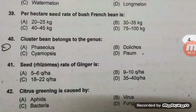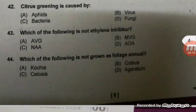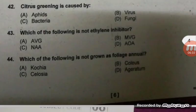Seed rate of ginger is generally 18 to 22 quintals per hectare — this question is also repeated in JRF 2018. Citrus greening is caused by bacteria — right answer C. The short form is Candidatus Liberibacter asiaticus; its vector is citrus psylla. Previously this was thought to be caused by mycoplasma, but it is now confirmed to be caused by bacteria.